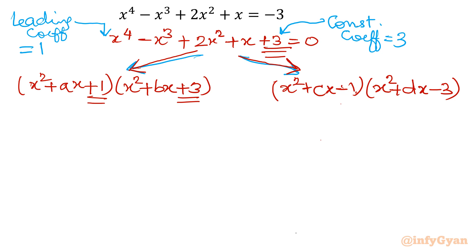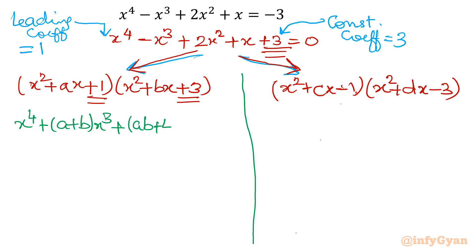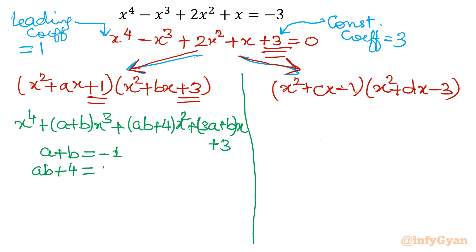If I write Case 1 in product form, then expanding gives: x⁴ + (a+b)x³ + (ab+4)x² + (3a+b)x + 3. Now I will simply equate all coefficient terms. So: a + b = −1, ab + 4 = 2, and 3a + b = 1. The constant is 3 = 3, which checks out.